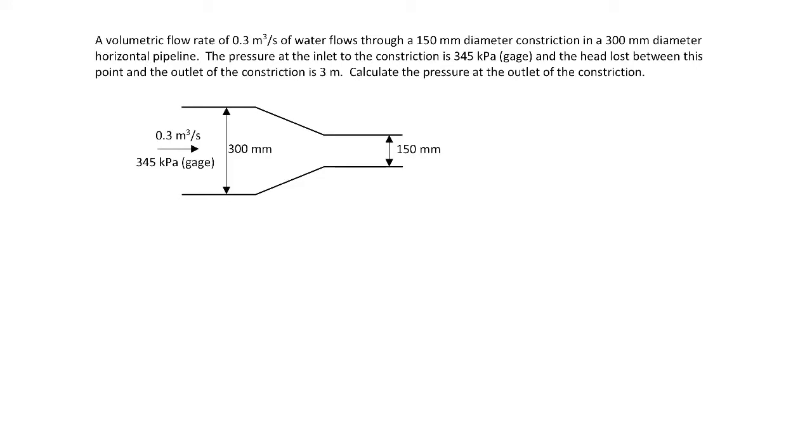We have a volumetric flow rate of 0.3 cubic meters per second of water flowing through a 150 millimeter diameter constriction in a 300 millimeter diameter horizontal pipeline. The pipeline coming in here is 300 millimeters and then it goes down to 150 millimeters here.